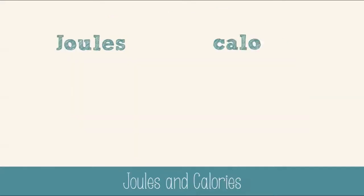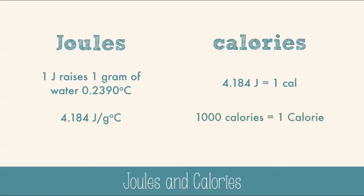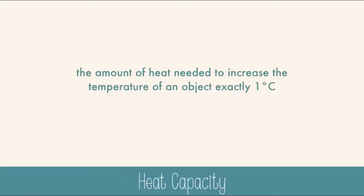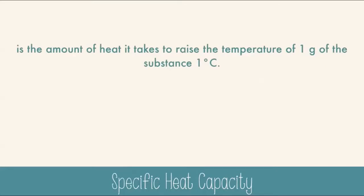Heat is measured in joules or calories. One joule raises one gram of water 0.2390 degrees Celsius. In food science we use calories: 4.184 joules makes up one calorie (lowercase c). To raise one gram of water one whole degree Celsius takes 4.184 joules. Be careful reading food labels — you're actually reading a kilocalorie, written with a capital C. Every object can be heated up. The amount of heat needed to increase the temperature of an object by exactly one degree Celsius is called heat capacity. Specific heat capacity is the amount of heat to raise one gram of the substance one degree Celsius, written as C, with units of joules per gram·°C.